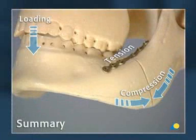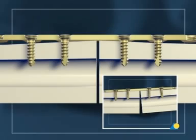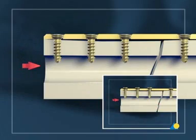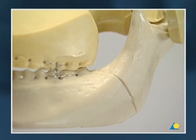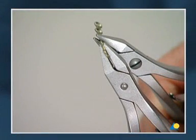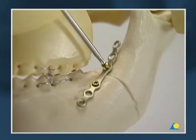This exercise has highlighted the principles of load sharing between the fixation system and the fracture surfaces in a simple transverse fracture, as described by Champy. In addition, the concept and advantages of a locking plate to help prevent primary and secondary loss of reduction have been shown. The main steps are: reduction of the fracture and MMF with Ernst ligatures, adaptation of the 6-hole 2.0 mandible locking plate, and fixation of the plate to the oblique ridge.